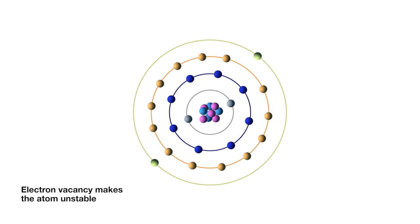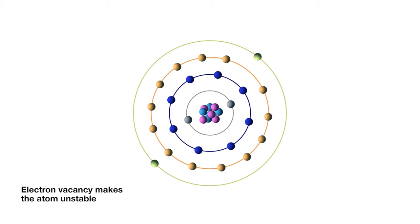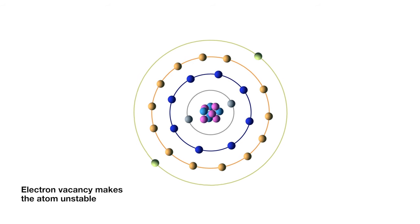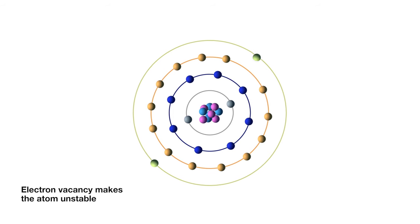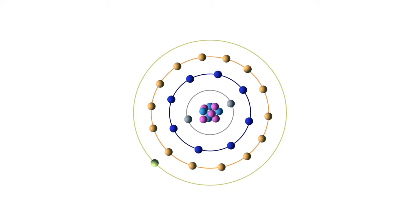The ejected electrons create a vacancy, making the atom unstable. To restore stability, electrons from higher orbits further away from the nucleus drop down to fill the vacancy. The excess energy released as the electrons move between the two energy levels or shells is emitted in the form of element-specific light or optical emission.